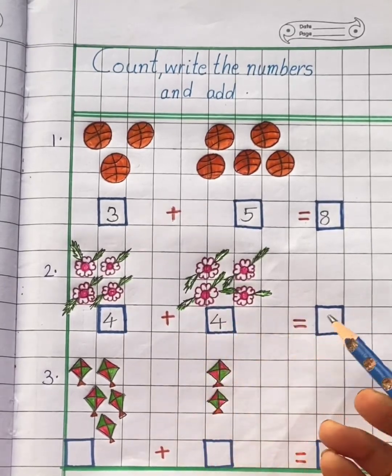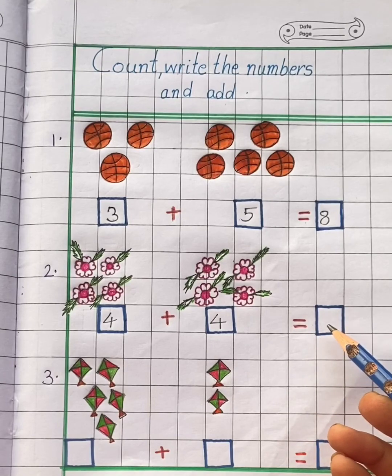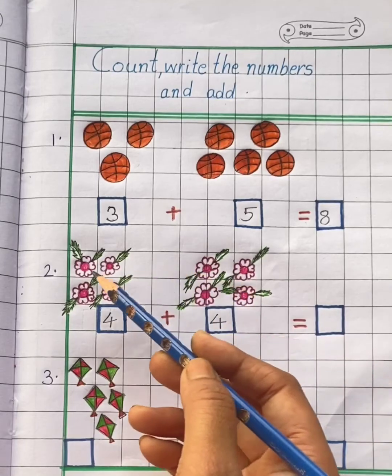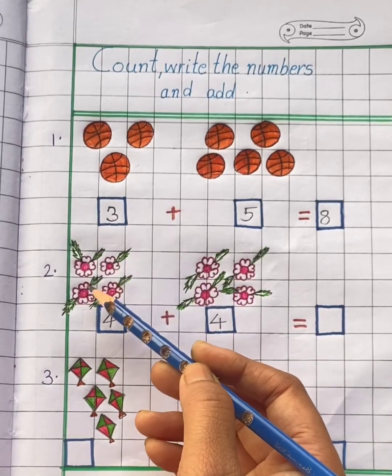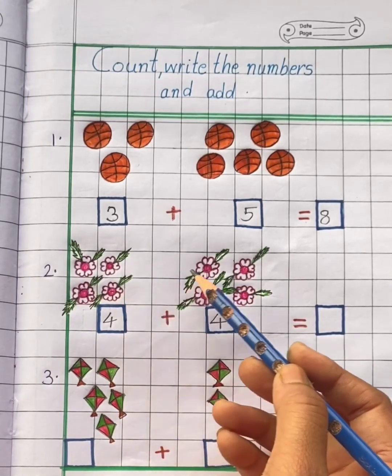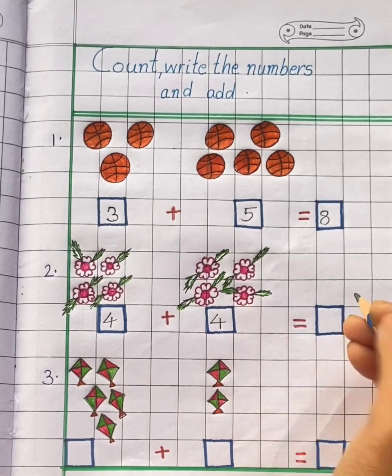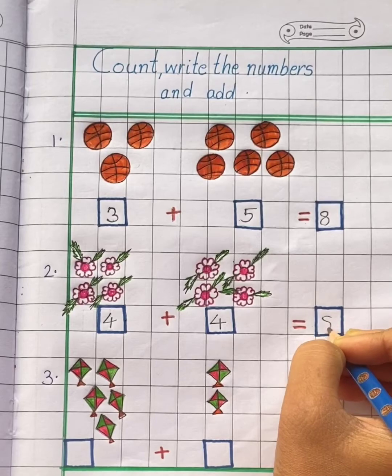Now we have to find the total number of flowers. Now let's start counting the flowers again. 1, 2, 3, 4, 5, 6, 7, 8. So total we have 8 flowers.